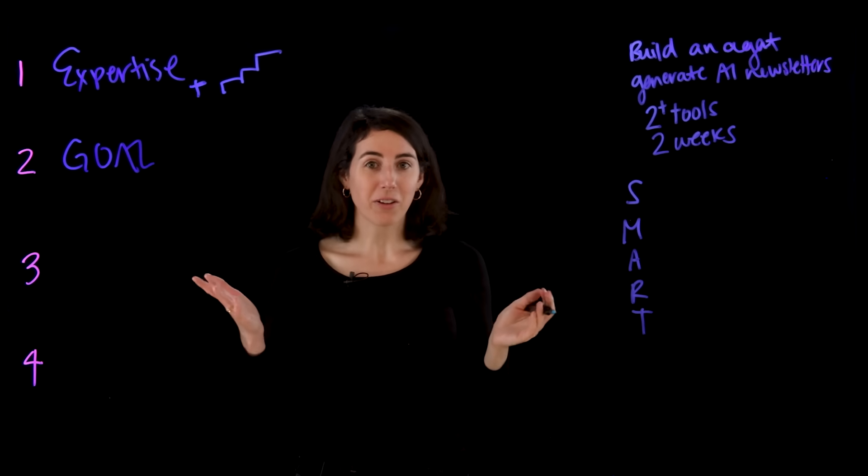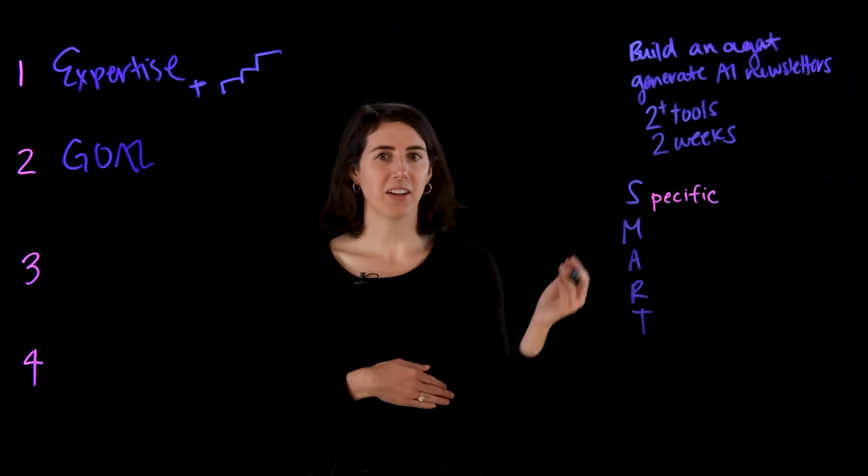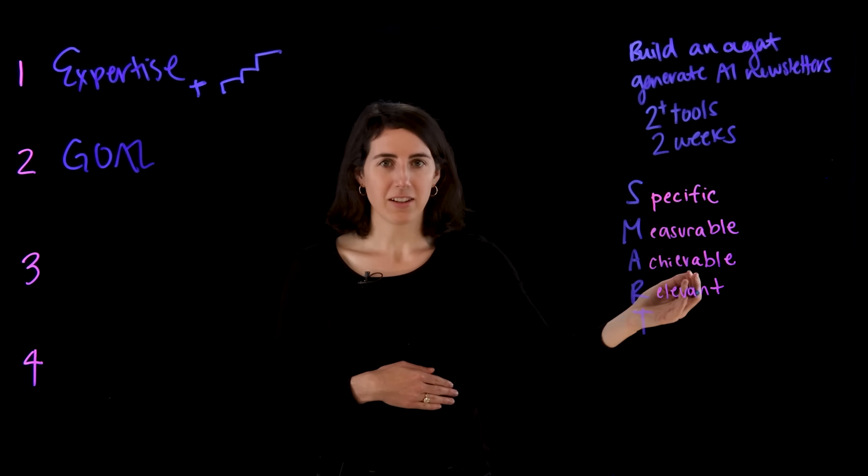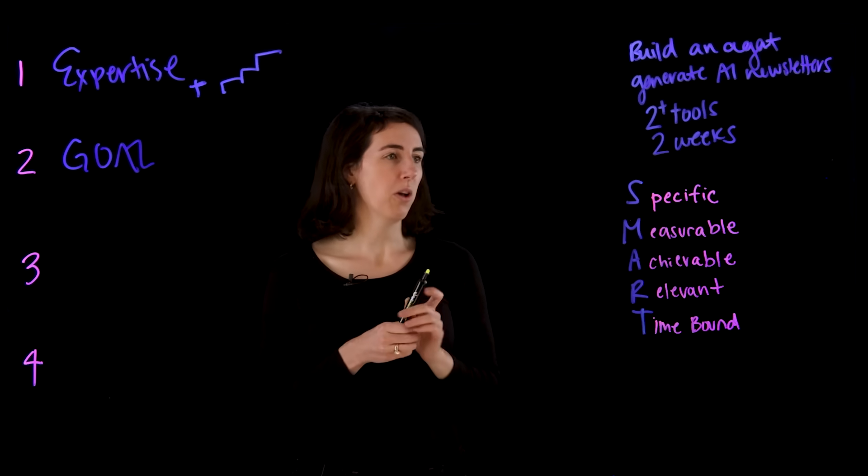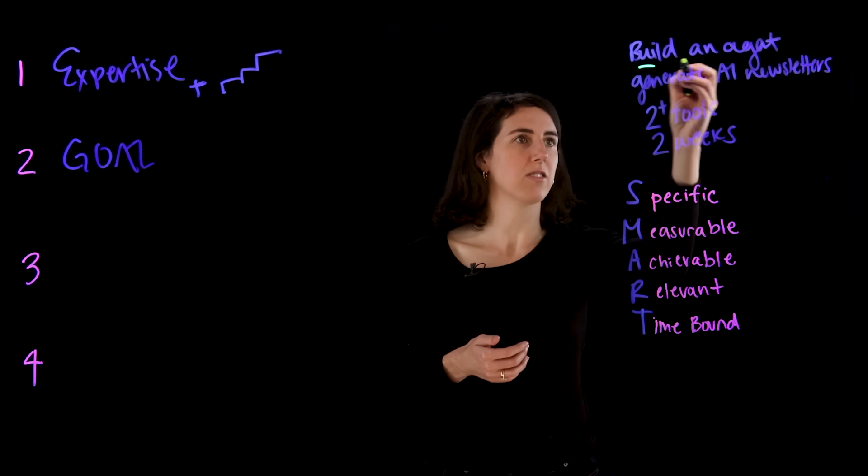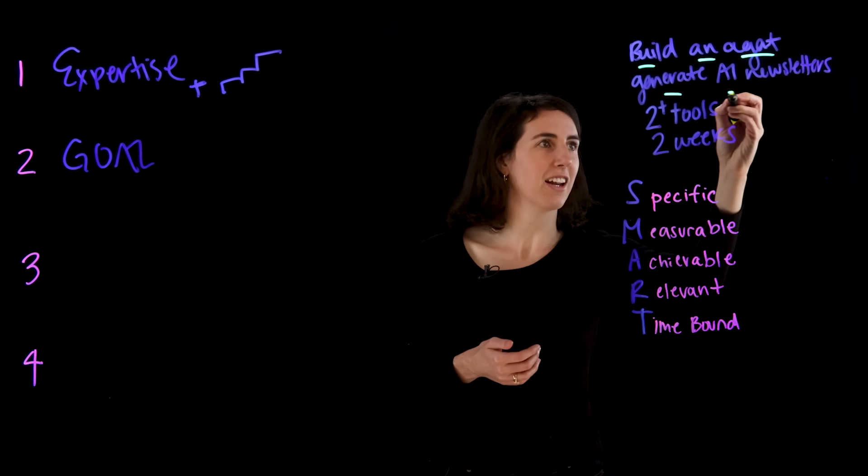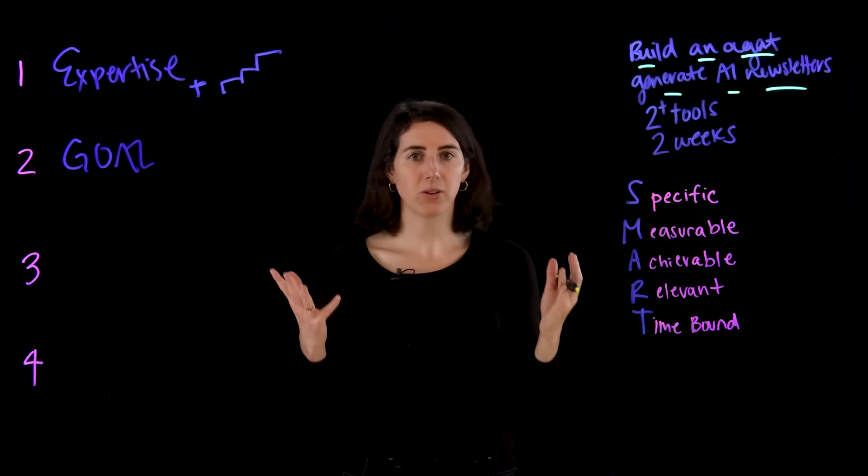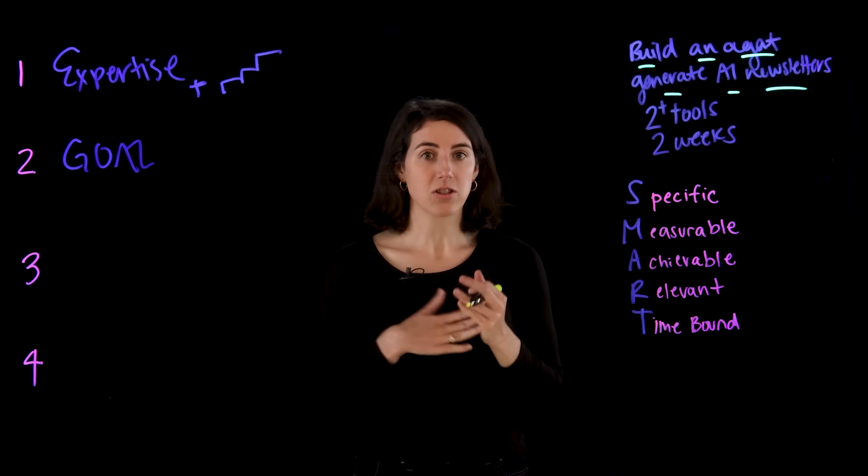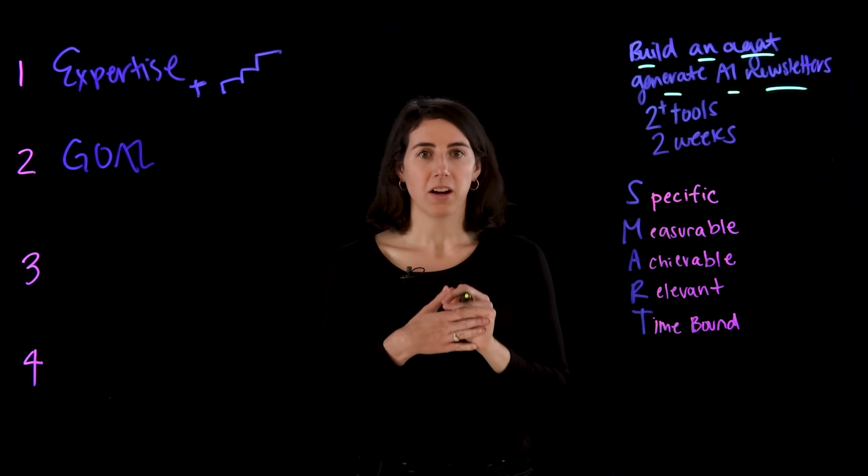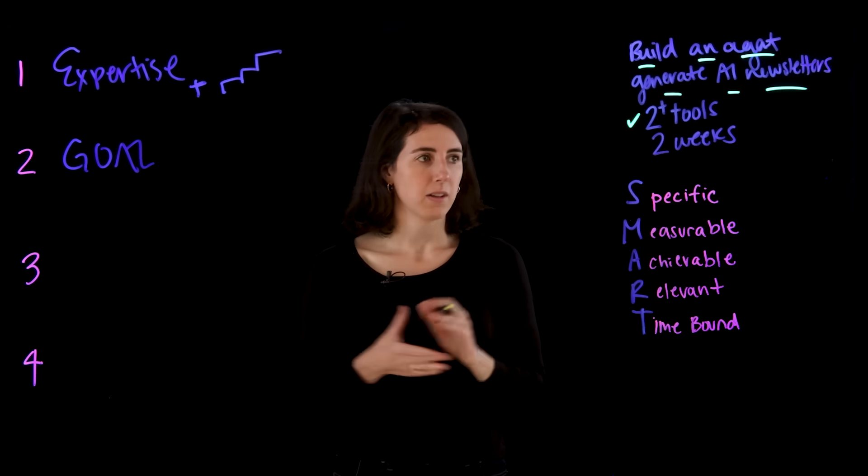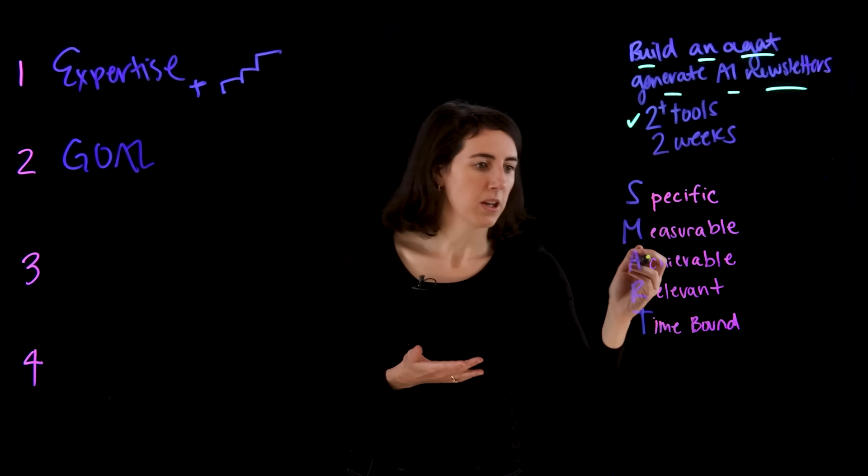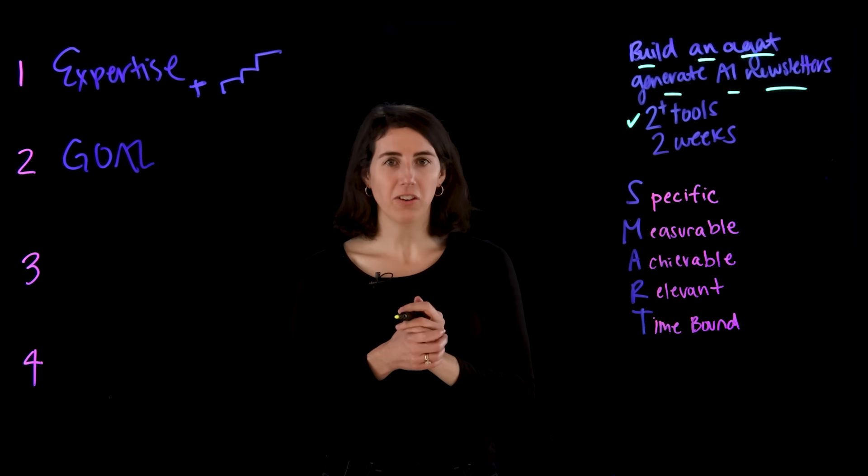What does SMART stand for? That is specific, measurable, achievable, relevant, and time bound. So as we break down our original goal, we were very specific, just building an agent generating AI newsletters. So we specifically said what we wanted this agent to do.